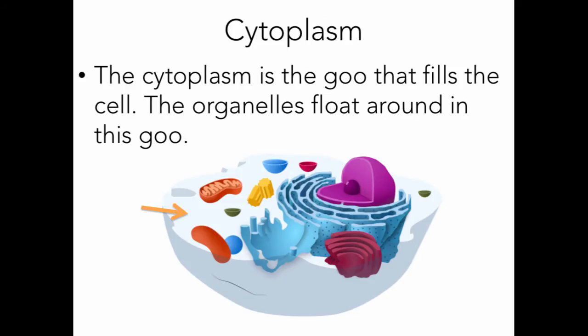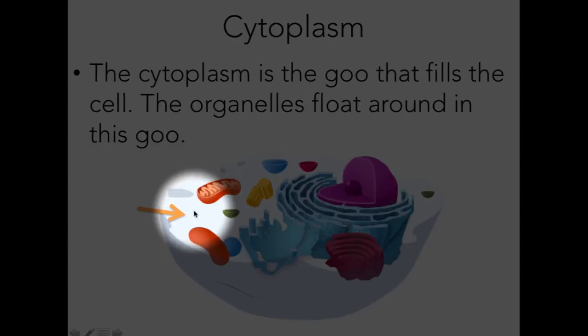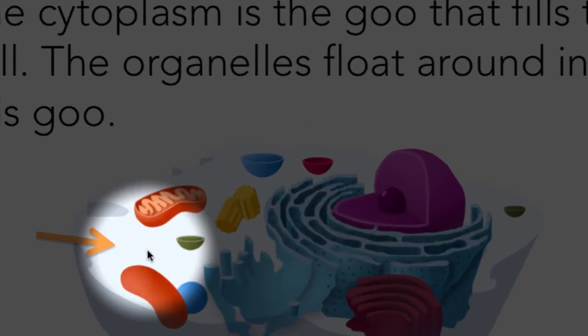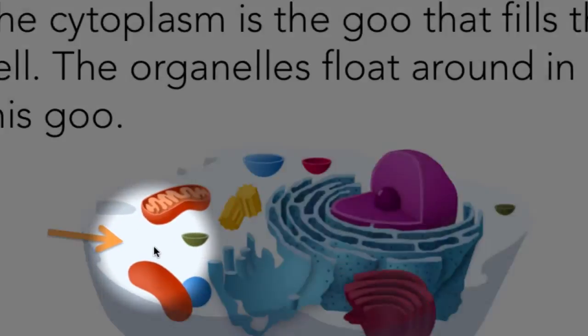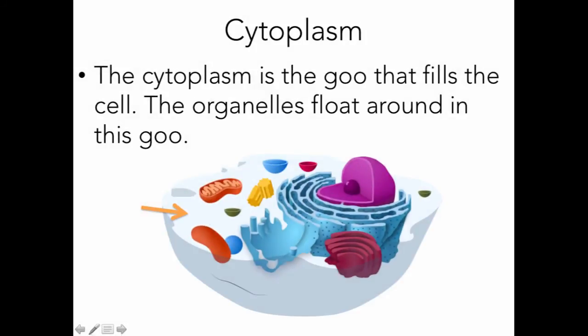The next cell part is the cytoplasm. The cytoplasm literally means 'cell goo' — it's the goo that fills up the cell, almost like water that fills up a balloon. The organelles float around in this goo. It almost looks like empty space, but it's not; it's filled with this gooey material known as the cytoplasm.